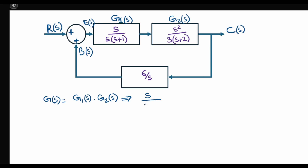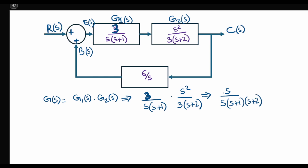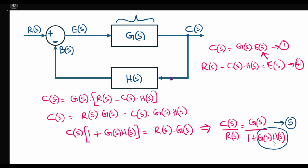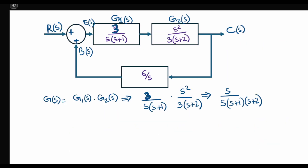We'll find the forward transfer function G(s), which in this case is a multiplication of the gains in the forward path: G1(s) times G2(s). Substituting the values — G1(s) is 3 over [s(s+1)] and G2(s) is s² over [3(s+2)] — and multiplying these two gains, the 3s cancel and we get the forward gain G(s) = s / [s(s+1)(s+2)], which simplifies. This is the forward gain. Next, we find the denominator, also known as the characteristic equation: 1 minus G(s)·H(s).